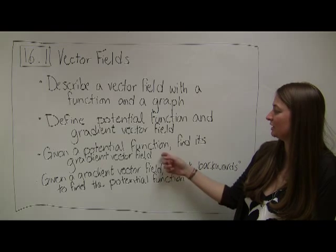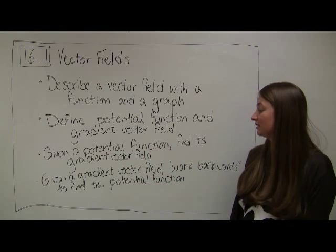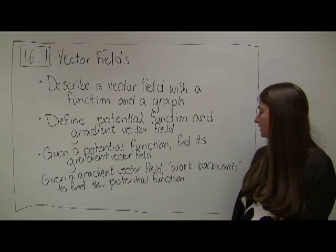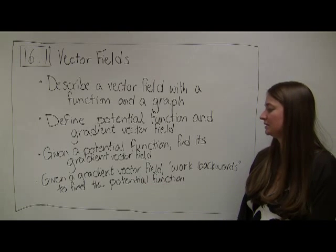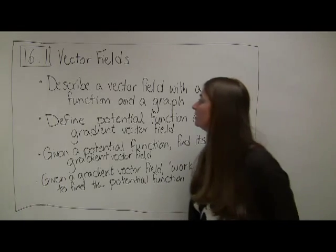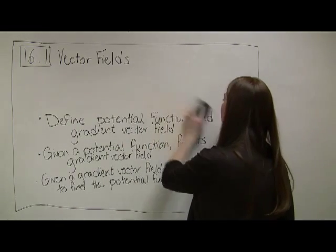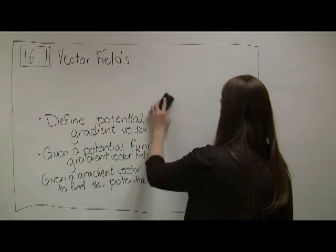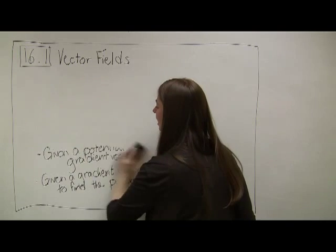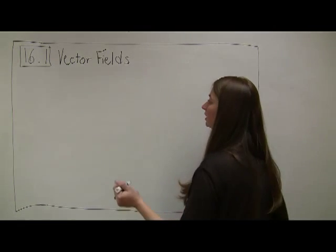And then finally, given a potential function, we want to be able to find the gradient vector field, and given the gradient vector field, we want to be able to work backwards to be able to describe what that potential function was. Let's start off by describing a vector field. Notice that this is something that we've seen before, so it is a little bit of review, but we're going to go into a little more detail than what we did before.